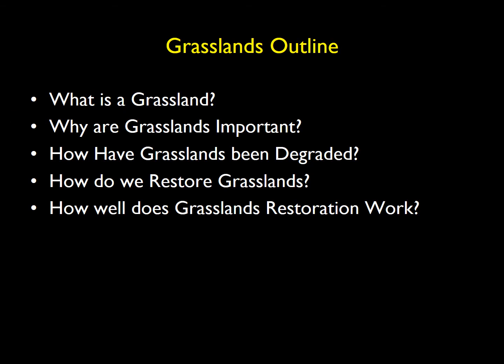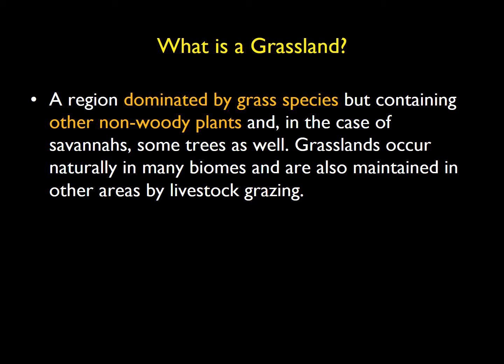We're going to talk about what actually makes a grassland — it's not as straightforward as you might think. It is an area dominated by grass species and other kinds of non-woody plants. Some graminoids in particular can be important contributors here. But depending on where you are, trees can be important as well — areas where there's a little higher rainfall, some low-lying areas, and then the African savanna as well.